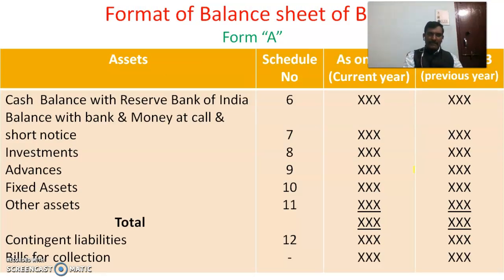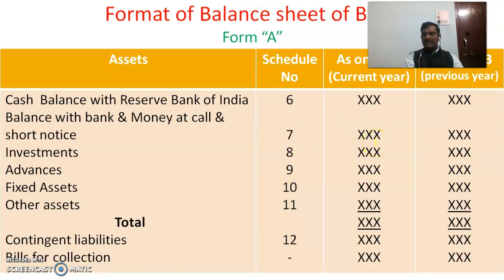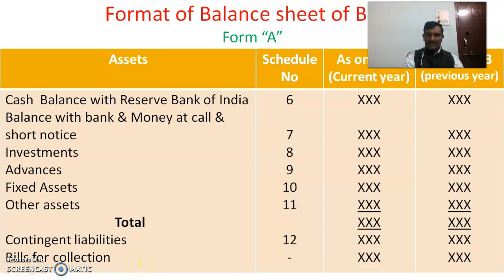The second part relates to Assets. Here we have schedules for Cash and Balance with Reserve Bank of India under Schedule 6, Balance with Banks and Money at Call and Short Notice under Schedule 7, Investments Schedule 8, Advances Schedule 9, Fixed Assets Schedule 10, and Other Assets Schedule 11. After totaling, we have two more important items: Contingent Liabilities under Schedule 12 and Bills for Collection.